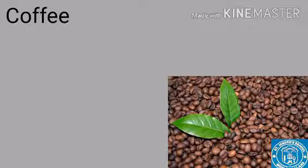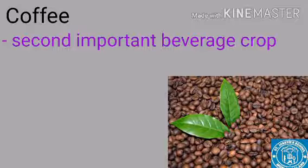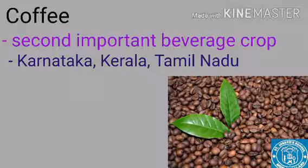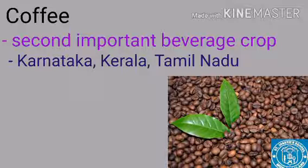The next crop is coffee. India is known for the best quality of coffee, and coffee is one of the important plantation crops. Coffee is grown in Karnataka, Kerala, and Tamil Nadu. It requires hot and humid climatic conditions with a temperature between 15 to 28 degrees Celsius and a rainfall of about 50 to 200 centimeters.